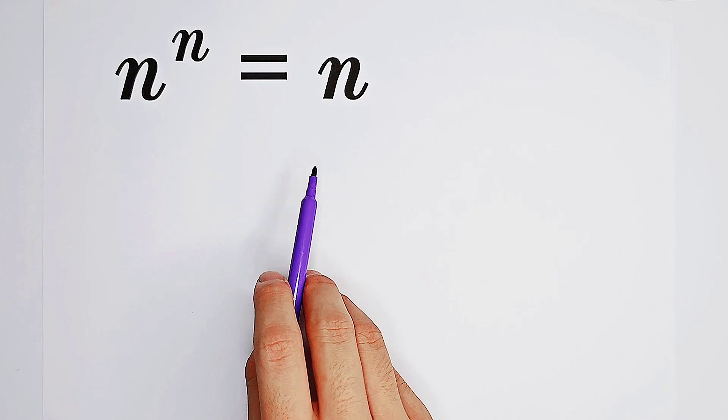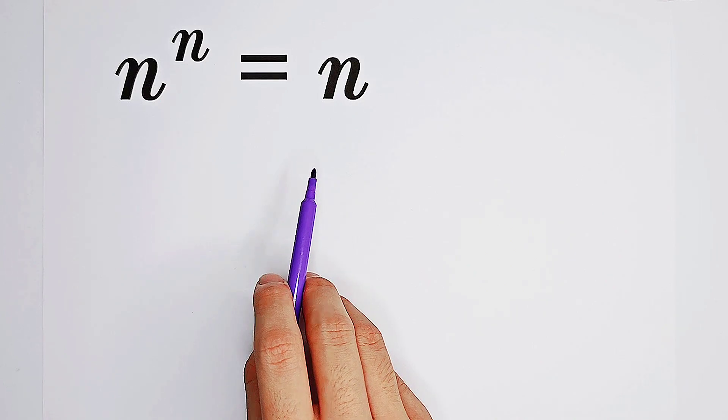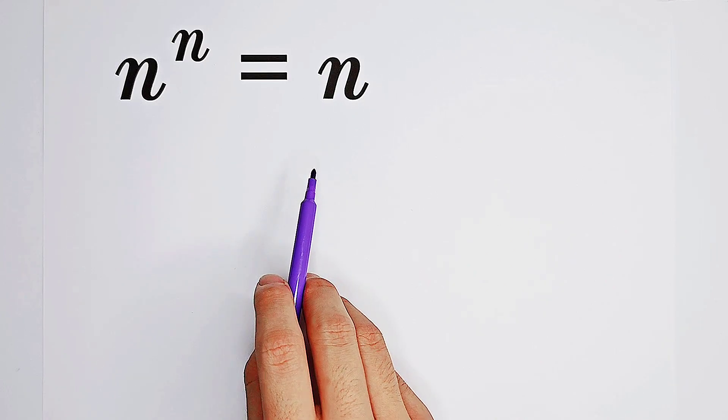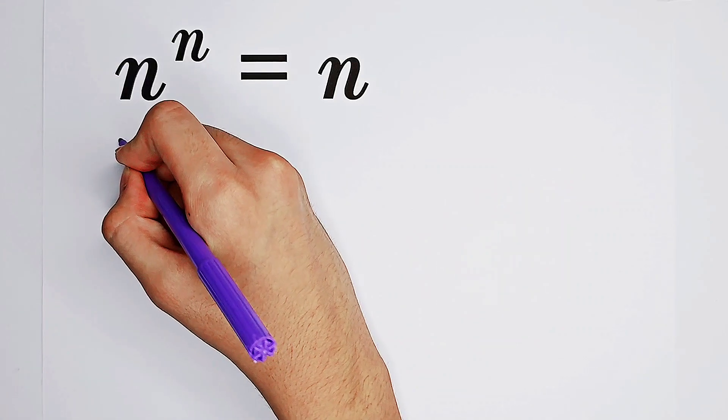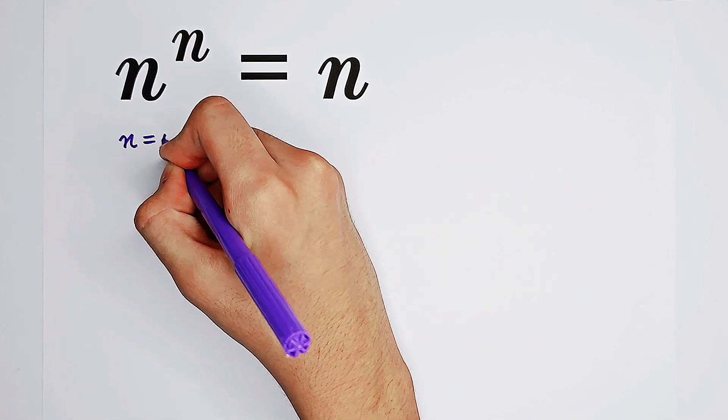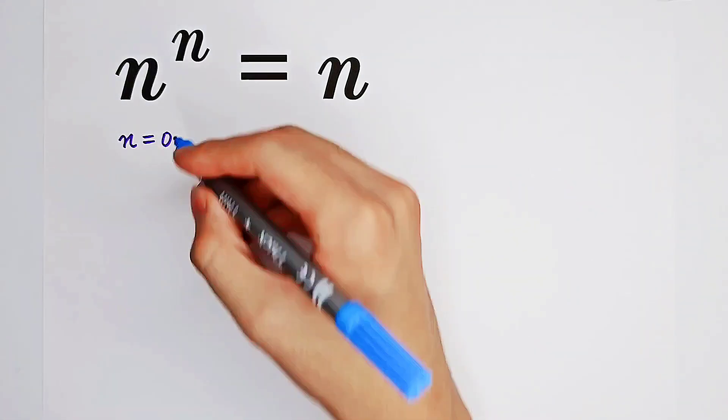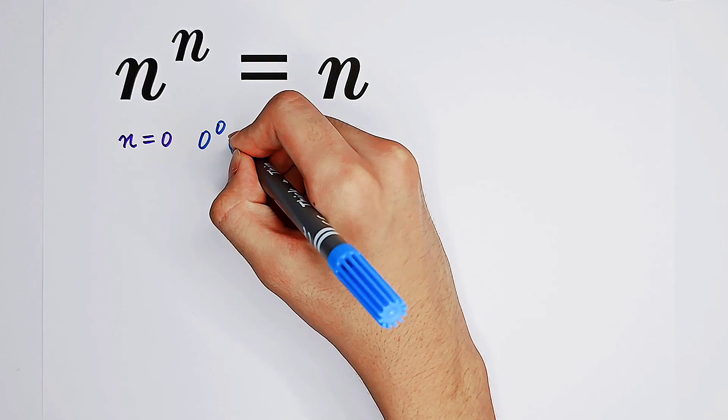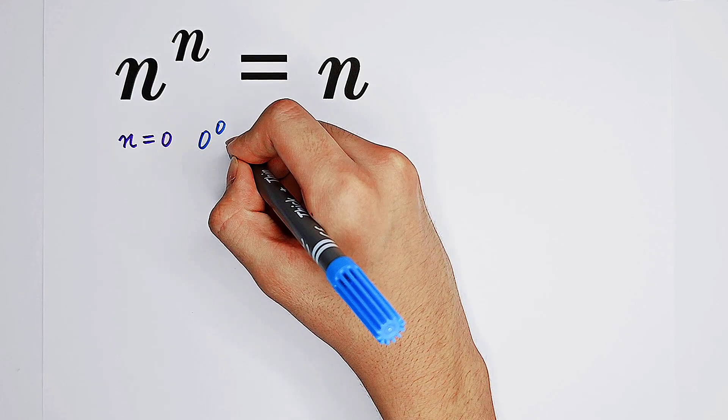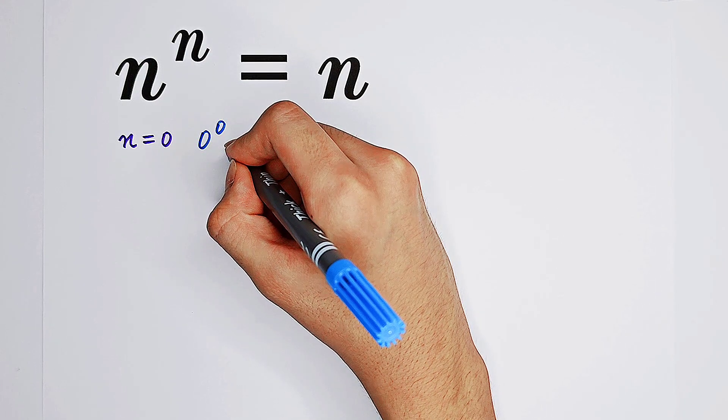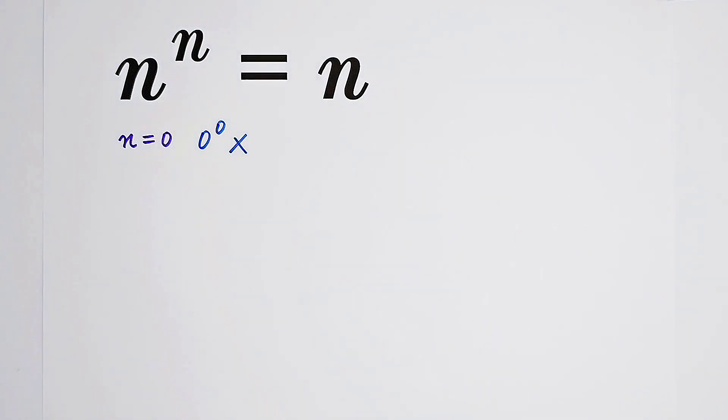For dealing with this kind of question, firstly, we claim that n cannot be zero. Why? If n equals zero, we have zero to the power of zero, which doesn't make any sense. So it is undefined, which means n cannot be zero.